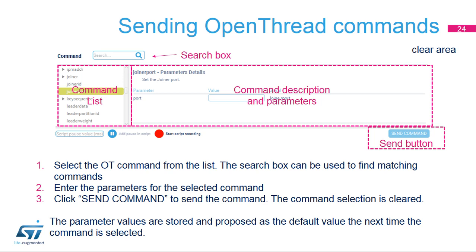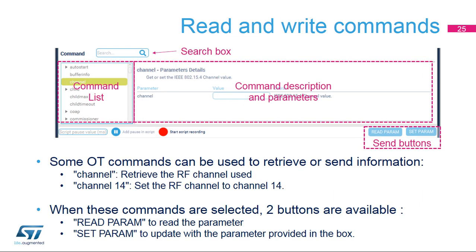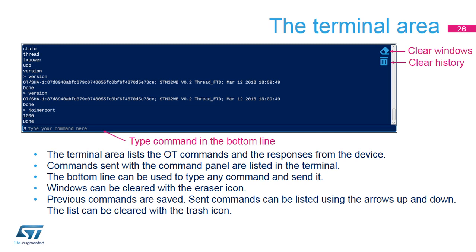Enter the parameter values, then click Send Command to send the command to the device. The list of sent commands is displayed in the terminal window. The tool stores the parameter values used for the sent command, so when the command is selected again, the parameters are already set to their previously used values. Some commands can be used to retrieve or set parameter data — when these commands are selected, the Send Command button is converted into two buttons: Read Param, to check the parameter value without sending parameters, and Set Param, to write values using the parameter values to build the command. Use the up and down keys to select a previous command from the history to send it again.